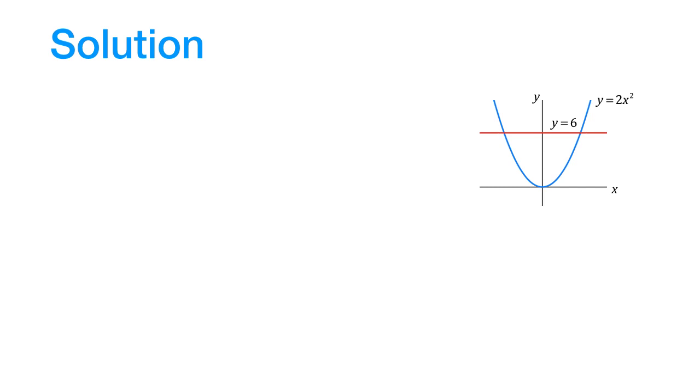Let us now find out where these two curves intersect. So for that, we equate 2x squared to 6 which means x squared is equal to 3 and therefore x is equal to root 3 and minus root 3.